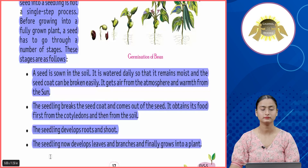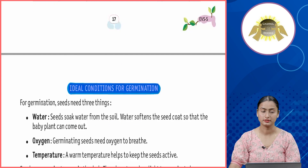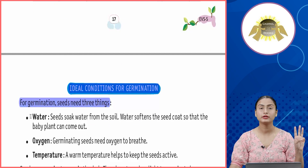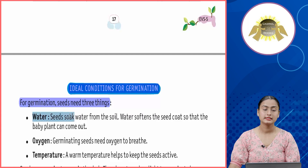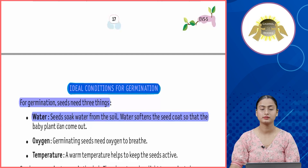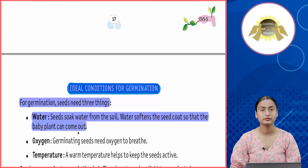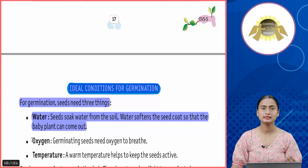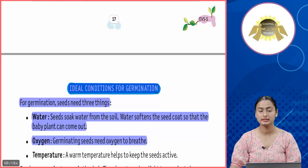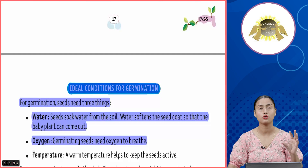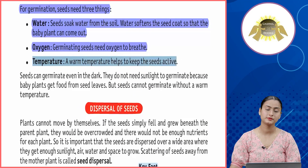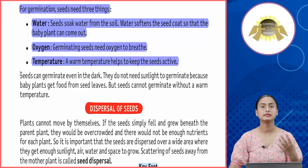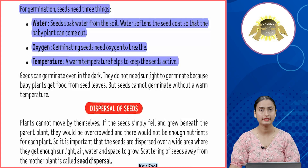Ideal conditions for germination: seeds need three things to germinate. First, water — seeds soak water from the soil, which softens the seed coat so the baby plant can come out. Second, oxygen — germinating seeds need oxygen to breathe. Third, temperature — a warm temperature helps keep the seeds active and aids their growth.